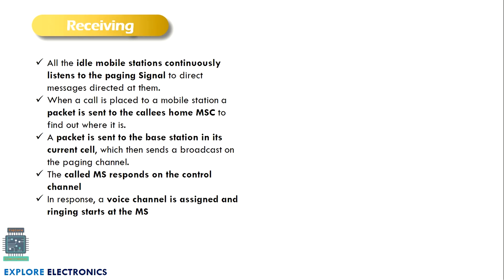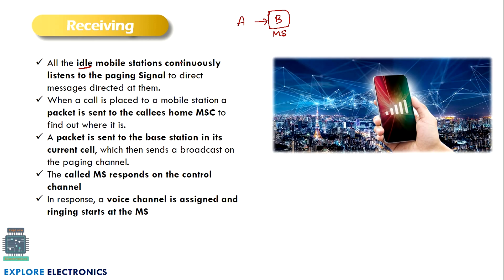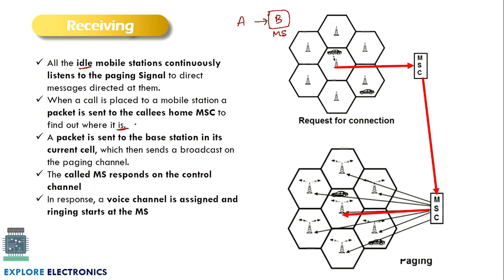Now, what is receiving? When person A wants to communicate with person B, how does B's mobile phone get the signal? All mobile phones will be in the idle state initially. In the idle state, the mobile station continuously listens to the paging information sent by the MSC through the base station. When a call is placed to a mobile station, a packet is sent to the call's home MSC to find out where person B actually is.